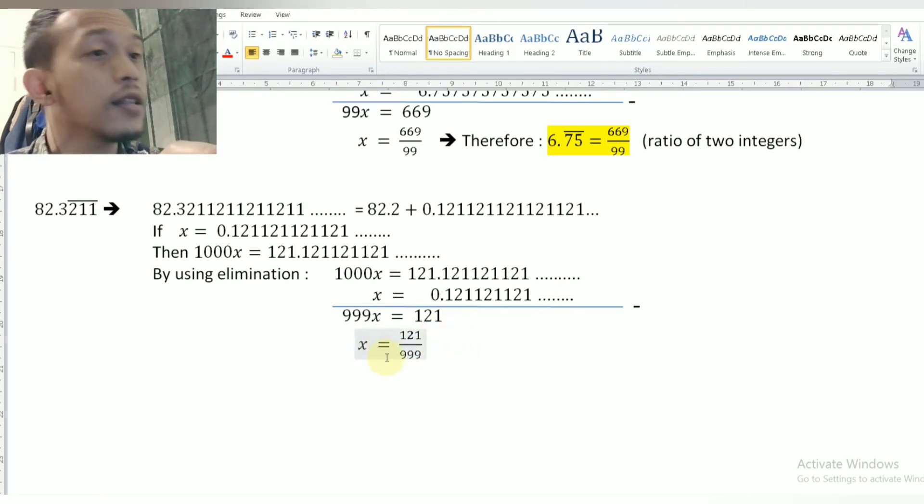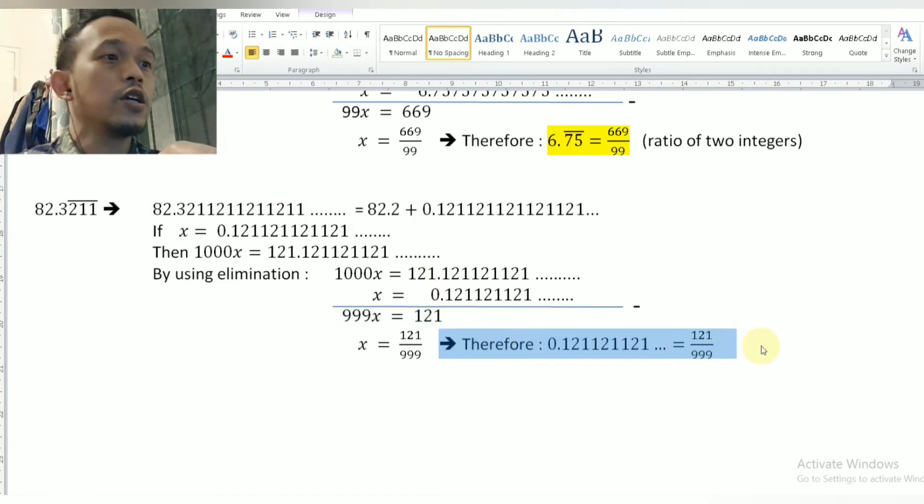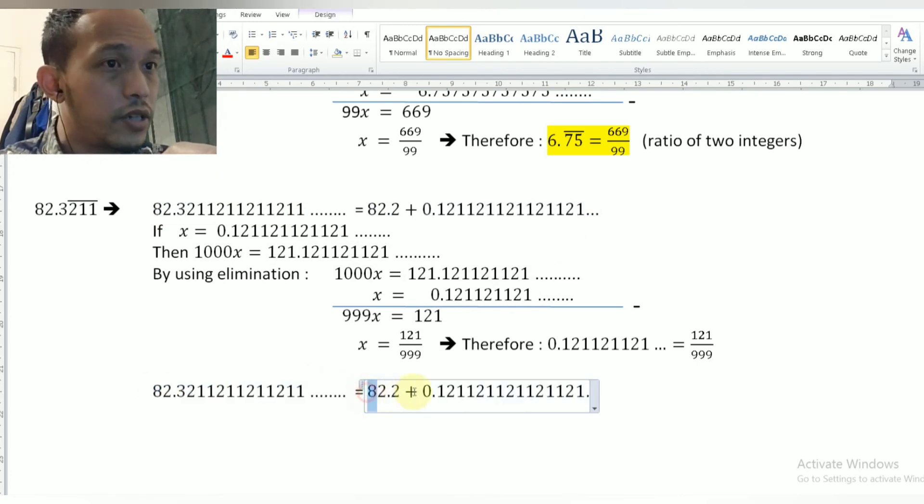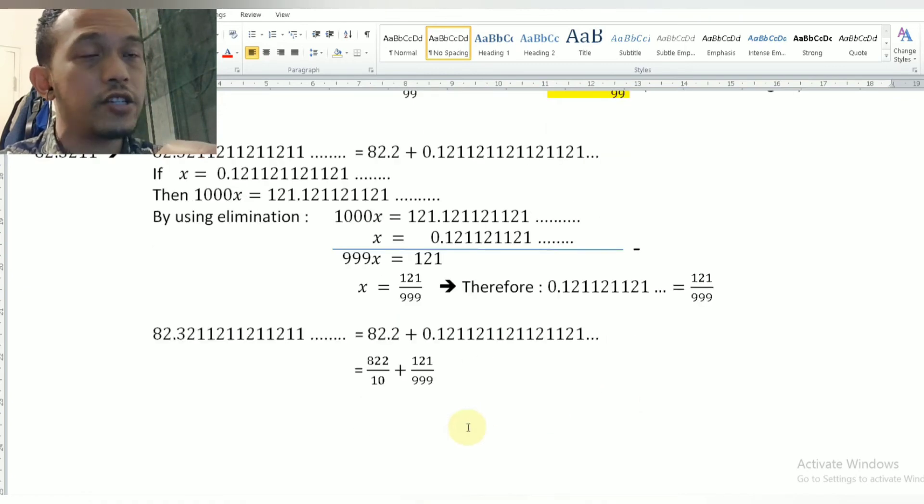So it is the ratio of two integers, but this is not the value of the original one, which we want to prove. This is the value of 0.121121121 and so on. Okay, so after this, we go back to this equation, this modification that we have done before at the first step. Since this equals this, and I know that this one is a ratio of two integers, and I know actually exactly that this one also can be expressed into the ratio of two integers. I convert both into that fraction. So both addends are the ratio of two integers.